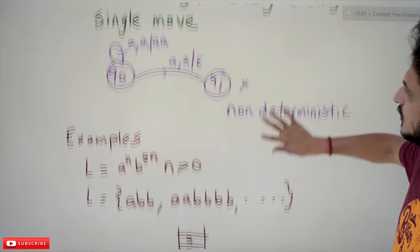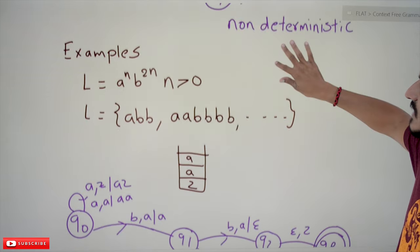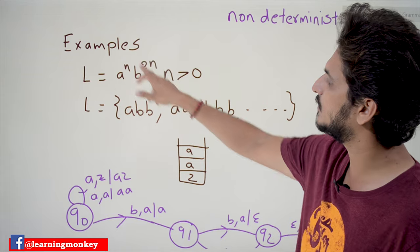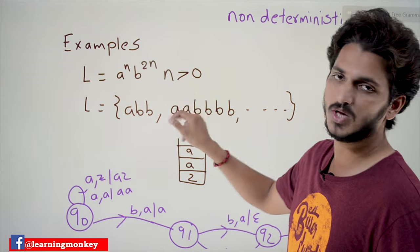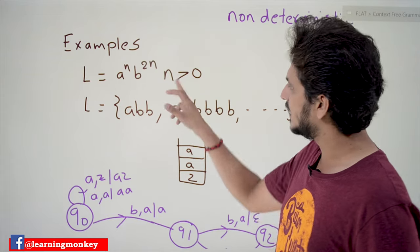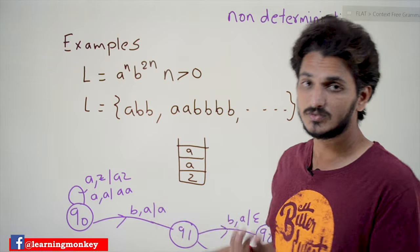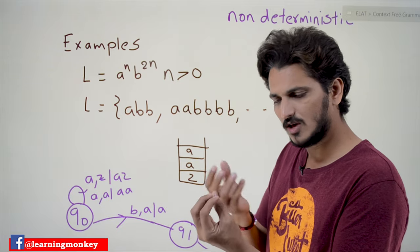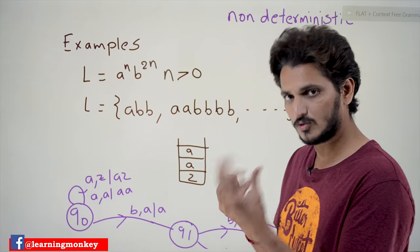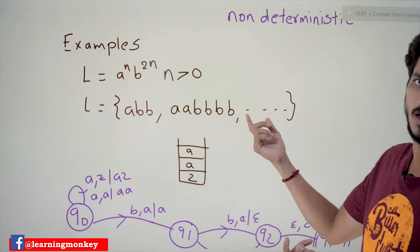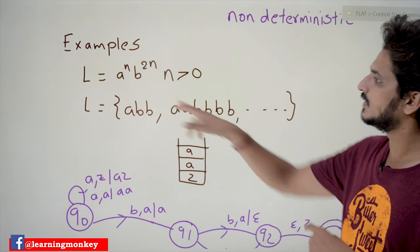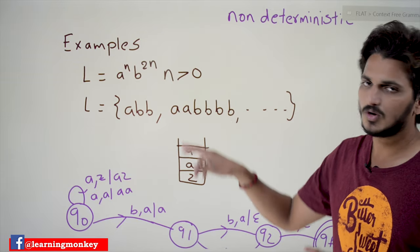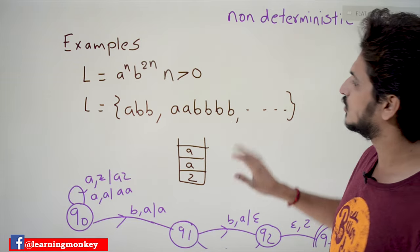Now let's do some practice examples on how to write a pushdown automata for a given language. Take L = a^n b^2n where n > 0. When n=1, you have 'abb' — one 'a' is followed by two b's. If you have two a's you have four b's — the number of b's is always a multiple of 2 times the number of a's.